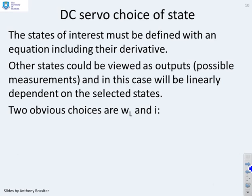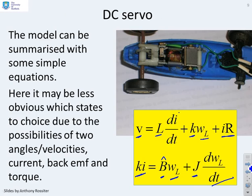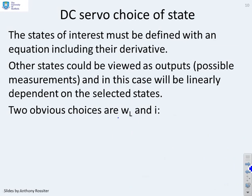Now, the states of interest must be defined with an equation including their derivatives. And if I go back here and look, you'll notice I've already got di/dt in this equation and d omega/dt in this equation. So a logical choice of states is probably going to be here, i and omega l. So that's what I've done. I've chosen those two as my states. But other possibilities are there.